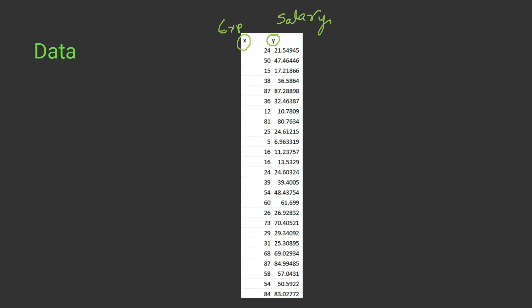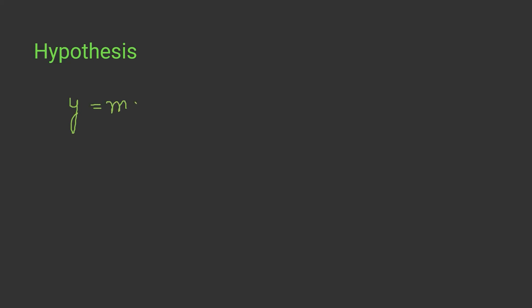You can have different input values, but a linear regression model can only work on a linear hypothesis, that is a single degree hypothesis. Now, the hypothesis is the most important thing when dealing with a machine learning model. Each machine learning model has a hypothesis using which it predicts the value. In the case of linear regression, we have y equals to mx plus c — this is the predicted y value.